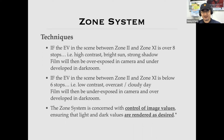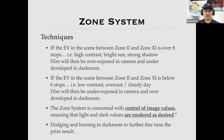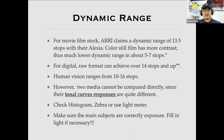He would do a lot of careful calculations — not just take a picture. He needed to plan exactly how much to underexpose and how much to overdevelop in the darkroom, marking everything down before returning to his darkroom. The Zone System is concerned with control of image values, ensuring that light and dark values are rendered as desired, with full detail across all 10 stops of light. He also used dodging and burning in the darkroom to further fine-tune the print result.